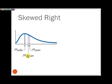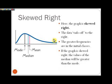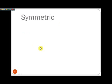Contrast that with a graph that's skewed to the right. Here the graph tails off to the right side, meaning the greater frequencies are in the beginning classes — the top classes of our frequency distribution. The graph tails off to the right, so it's skewed right. And the values of the median will be greater than the mode. The mode is always the most frequently occurring item, so it's always at the peak of the graph.